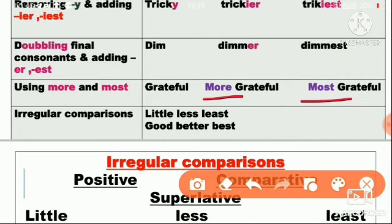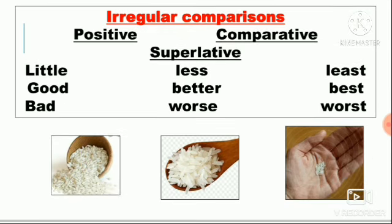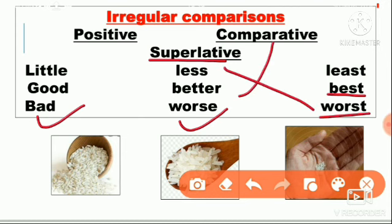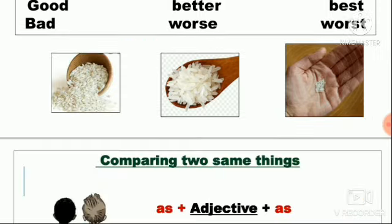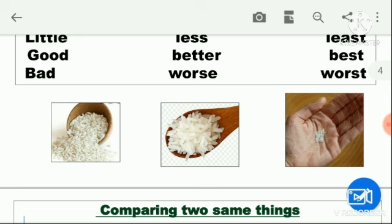There are also certain irregular comparisons. For example, little in the comparative form will be less and in the superlative form will be least. Good will be better in comparative form and best in superlative form. Bad will be worse in comparative and worst in superlative. So for example, if rice is given — little rice, less rice, and least rice — bohut hi kam chawal ke daane.